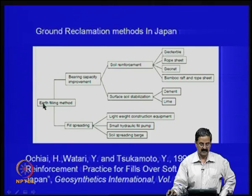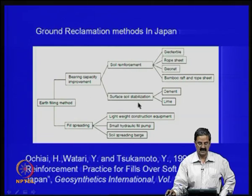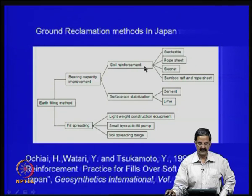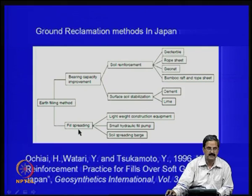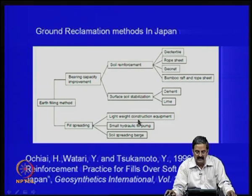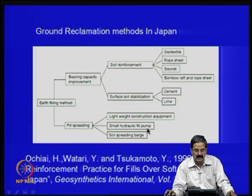This is a typical example of a filling method for bearing capacity improvement. One can use soil reinforcement or surface soil stabilization — using lime, cement, and many other methods. For reinforcement, one can use a geotextile, rope sheet, geonet, or even bamboo — many materials are possible. For spreading fill over very soft ground, lightweight construction equipment, small hydraulic fill pumps, and soil spreading barges are all required.